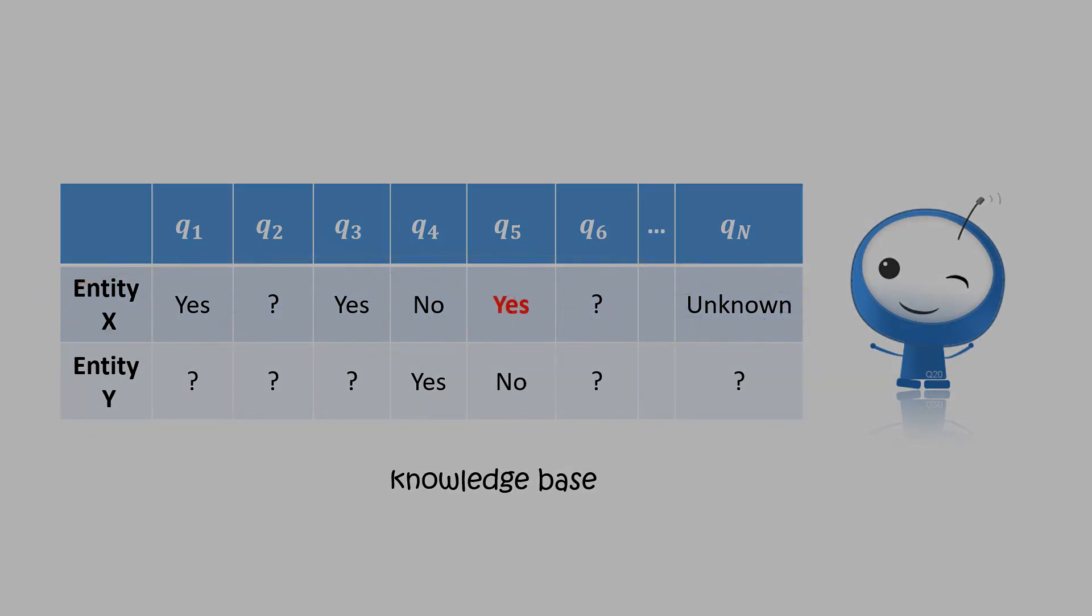An episode of 20 questions concentrates on one entity, say X. So if the agent figures out the X in less than 20 questions, say 17 questions, it can use the rest three questions to ask something that is missing in its knowledge base.